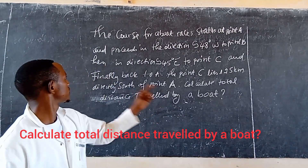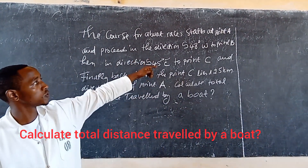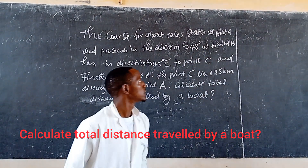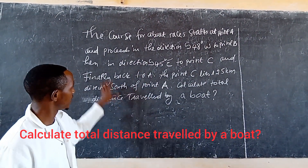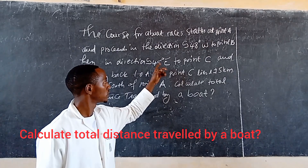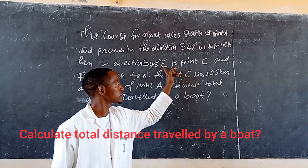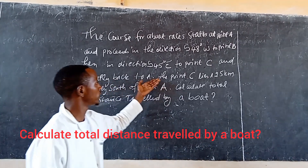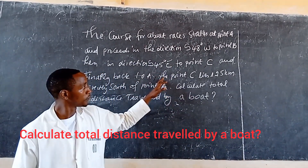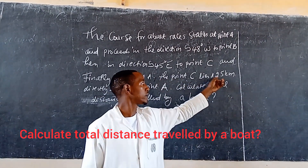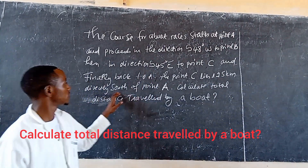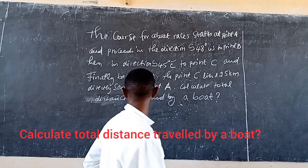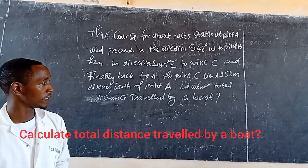Start at point A and proceed in the direction of S48° west to point B. Then in the direction of S45° west to point C, and then finally back to point A. Point C lies 125 kilometers directly south of point A. Calculate the total distance traveled by the boat.